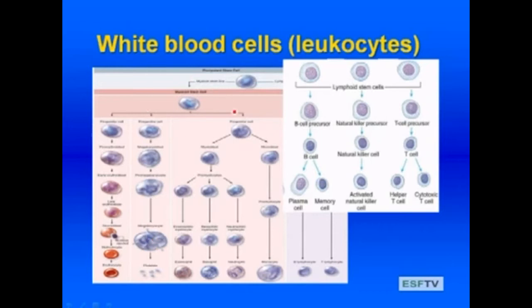The progenitor cells give rise to granulocytes — eosinophils, basophils, and neutrophils — as well as monocytes, which are primarily responsible for phagocytosis. There are also lymphoid stem cells present within lymph tissues, and these produce B cells. B cells give rise to plasma cells as well as memory cells. Natural killer cells are another important component of our immune response, originating from lymphoid stem cells, as are T cells.